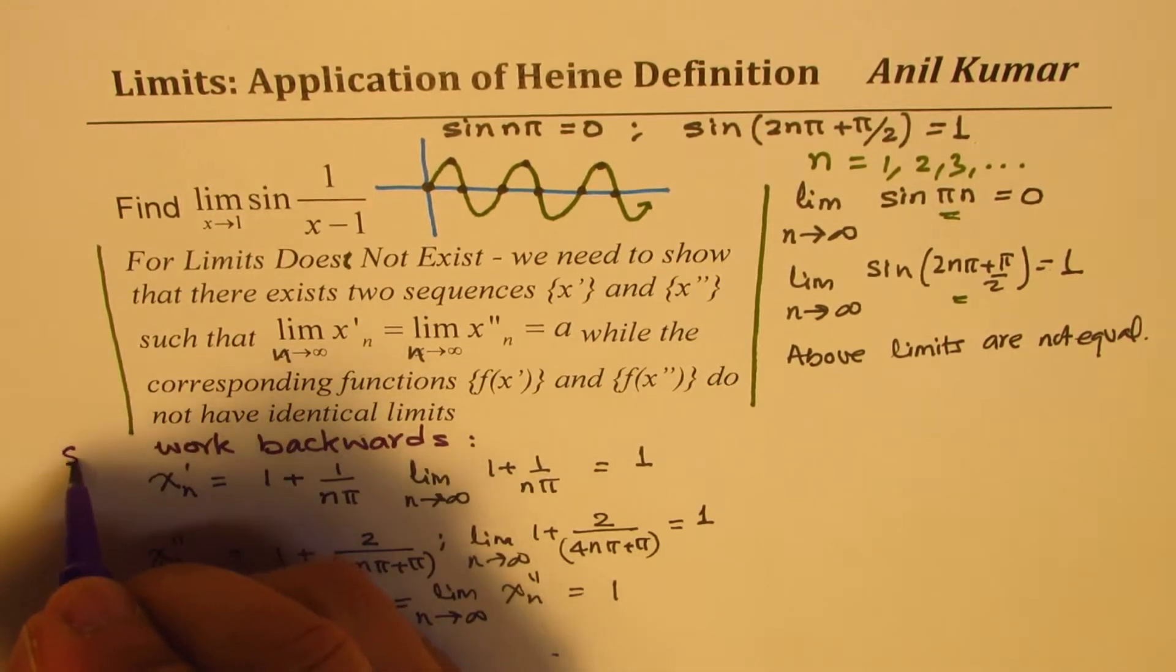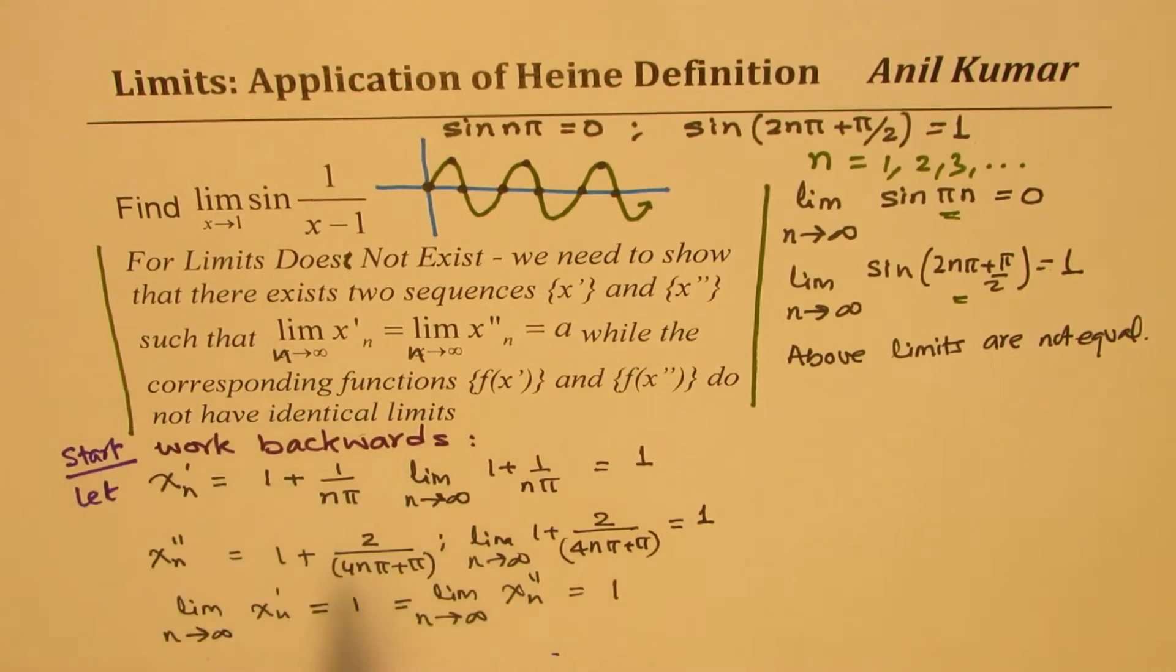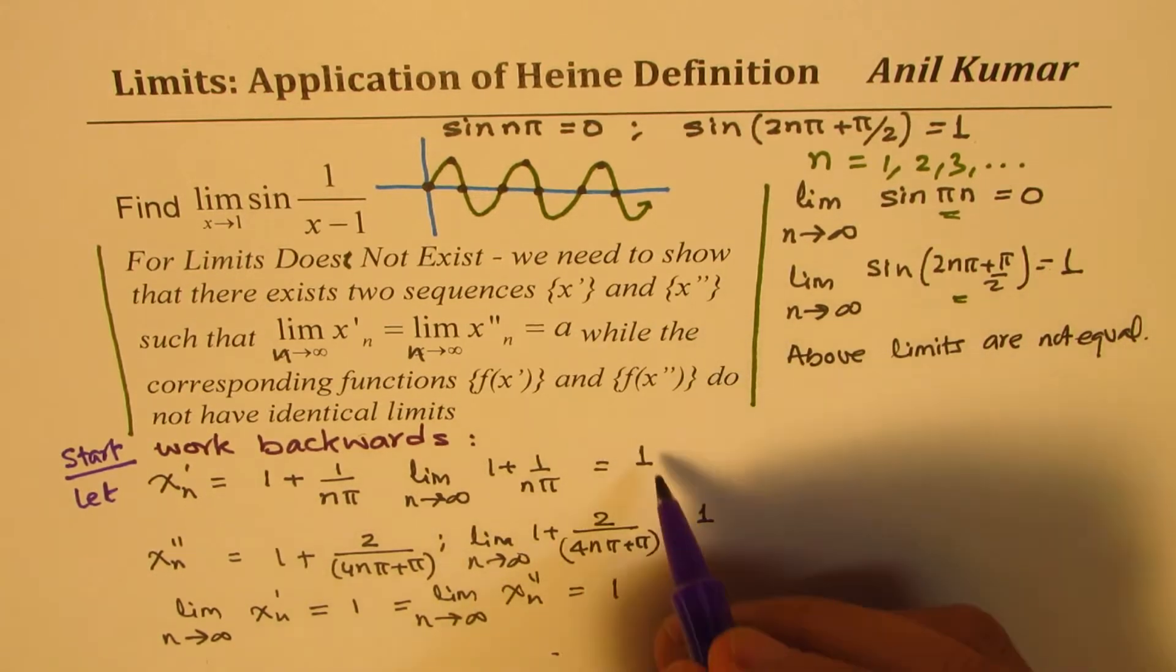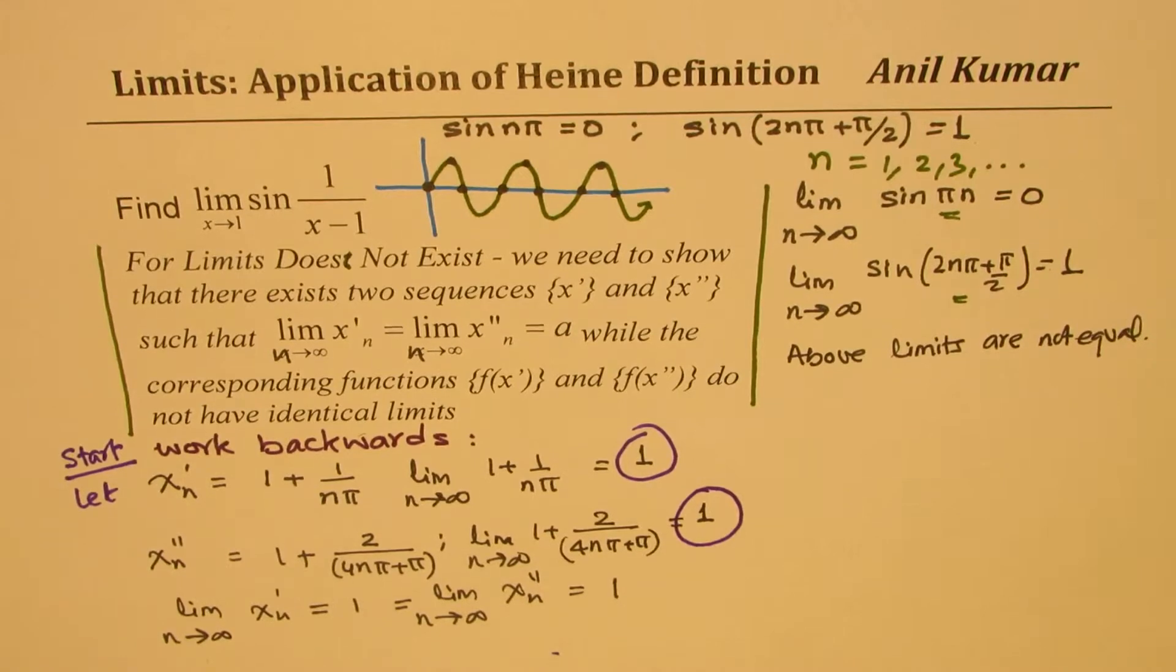Now to provide the solution, we will start from here. So we will say let the series be x_n equals to 1 plus 1 over n pi and x double prime be 1 plus 2 over 4n pi plus pi. You will observe that the limit of these two series is 1 plus 1 over something, and that something is approaching 0 when n is approaching infinity. So the limit is 1. So for both, we have a limit of 1.